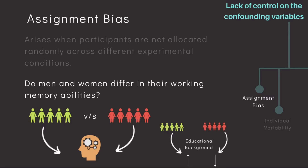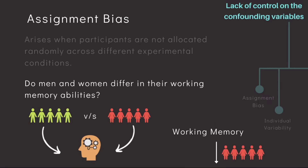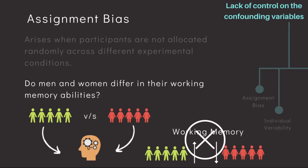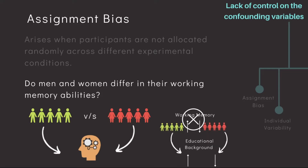After the study is conducted, it's possible you find that women have lower working memory abilities than men. While this could be correct, it is well possible that this conclusion is erroneous and affected by assignment bias. The experimenter initially did not control for the educational background of participants, such that the men recruited were higher in educational ability than women, which could have affected the conclusions discerned about their working memory abilities.